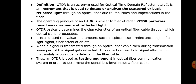Rayleigh scattering takes place along the optical fiber whenever the light transmitted through the fiber strikes the dopant particles in the fiber core, causing it to scatter in all directions. In the case of frontal reflection, it is due to the change in the refractive index of the media — whenever light enters from one medium to another of different refractive index, reflection takes place.